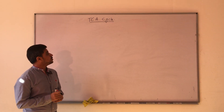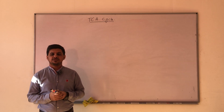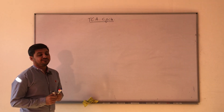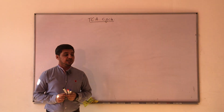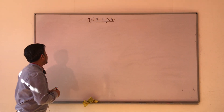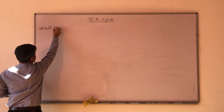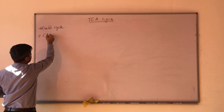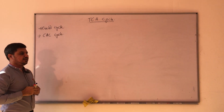TCA cycle. Today we are going to start with the TCA cycle, that is the tricarboxylic acid cycle. It was discovered by a scientist whose name was Hans Krebs, and it is also named after the scientist who discovered it as Krebs cycle. Its third name is the citric acid cycle.